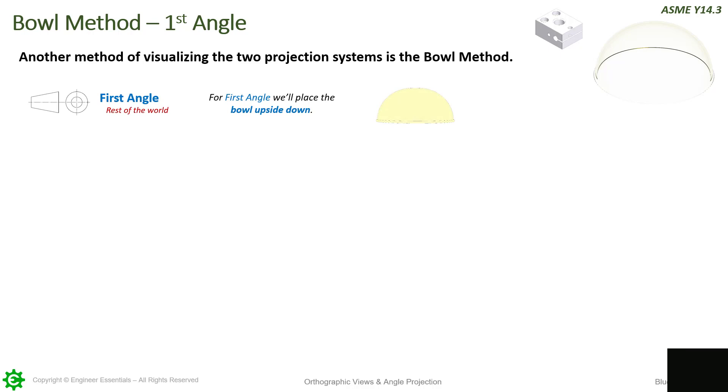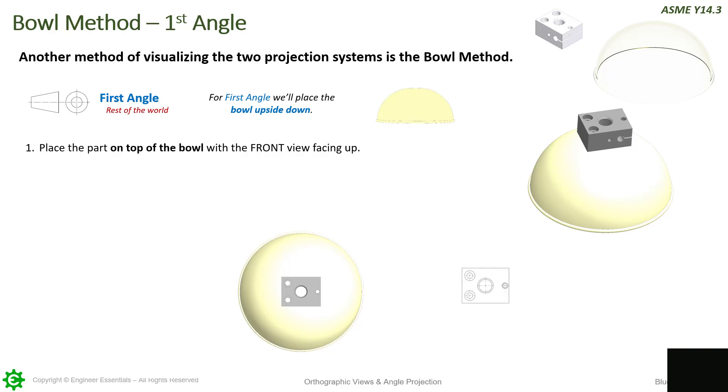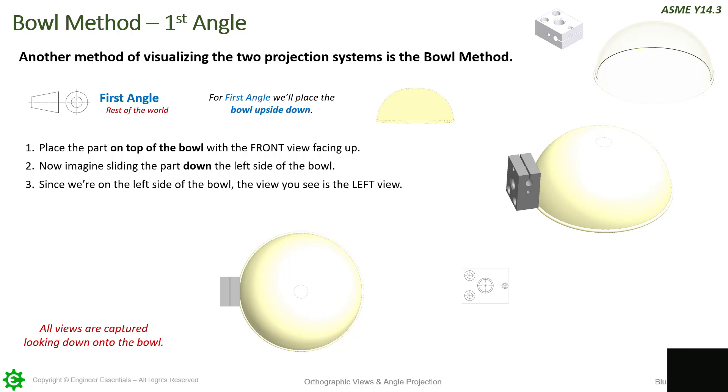The good thing about the bowl method is it can also be used for first angle. There's only one big difference. This time, we're going to flip the bowl upside down as we're sliding the part along the bowl. So, once again, we're going to start with the part on top of the bowl with the front view facing up, just like this. Remember, the front view on both versions doesn't change. We're still viewing the front of the part here. This is how it would look on our 2D print. Now remember, all views are captured looking down onto the bowl. Now, imagine sliding the part down to the left side of the bowl, just like this. That is what the left view would look like and where it would be on your drawing. Since we're on the left side of the bowl, the view you see is the left view. Right here.